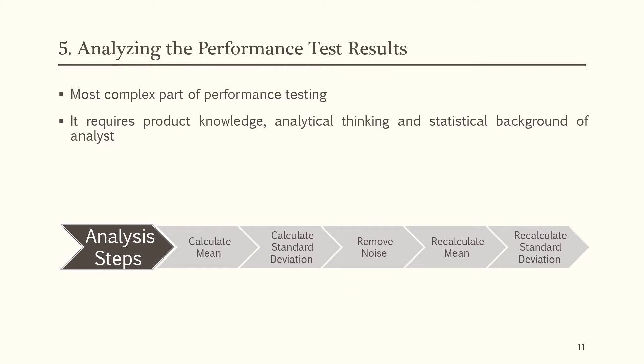The fifth step is analyzing the performance test results — the most complex part of performance testing. It requires product knowledge, analytical thinking, and a statistical background. Analysis steps include: calculate the mean of performance test results, calculate standard deviation, remove noise, then recalculate mean and standard deviation. Noise refers to a set of performance numbers from multiple runs where, in a few iterations, errors committed by scripts, software, or human actions produce values that are out of range and prevent meaningful analysis. Such values are called noise and the process of removing them is called noise removal.